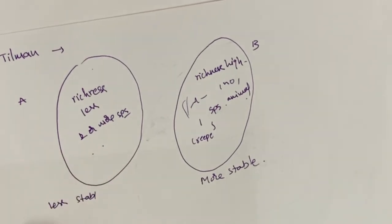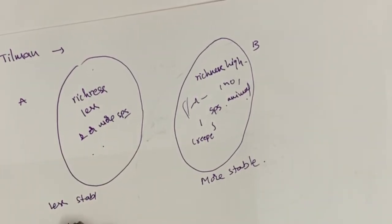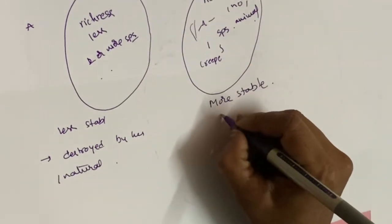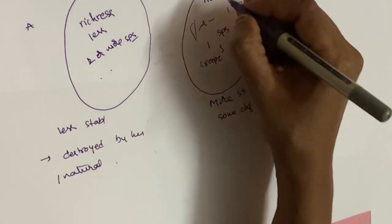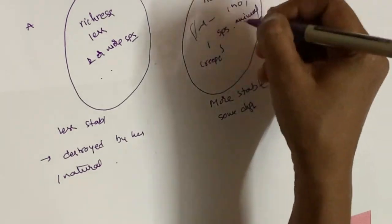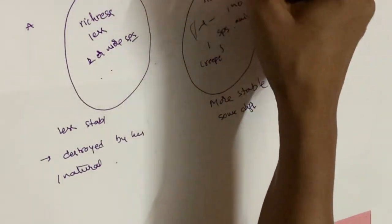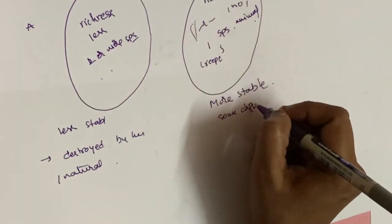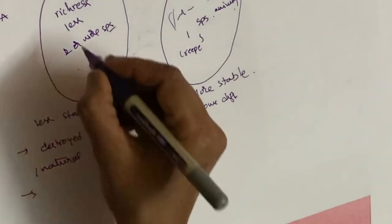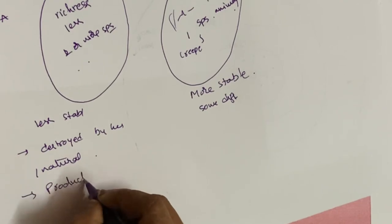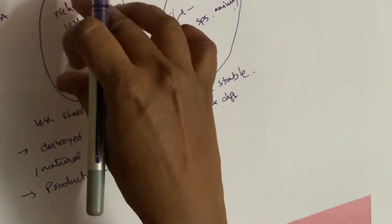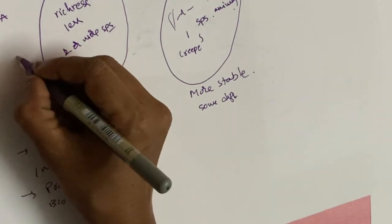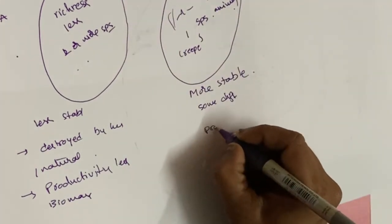Plot A, with fewer species, is less stable — it can be easily destroyed by human activities or natural calamities. Plot B is more stable because it contains a large number of species; removing big plants is a difficult task, making it harder to destroy by humans or nature. Additionally, the productivity of Plot A is less — the formed biomass is less — whereas in Plot B, with more species present, productivity is high.